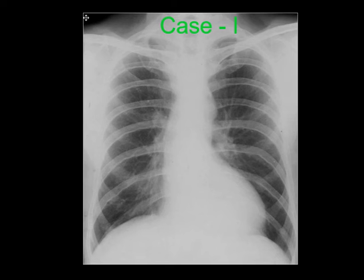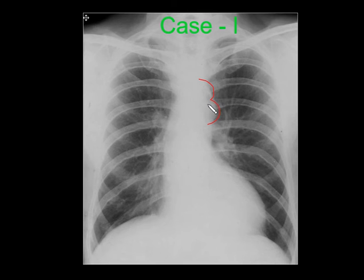Other causes of bilateral inferior rib notching include SVC obstruction, arteriovenous malformations, Takayasu's disease, tetralogy of Fallot, schwannomas, and NF1. Superior rib notching can be seen in osteogenesis imperfecta, connective tissue disorders, and hyperparathyroidism. The classical figure-of-three appearance shows pre-stenotic and post-stenotic dilatation with constriction at the stenotic segment.